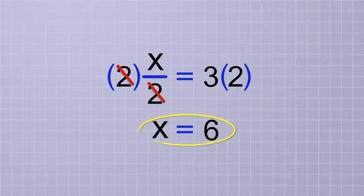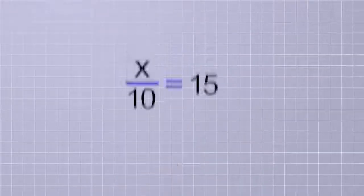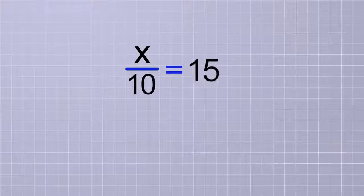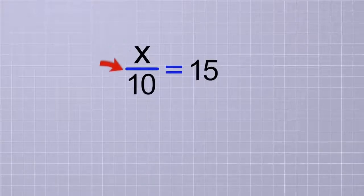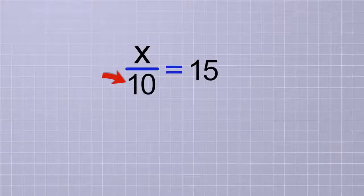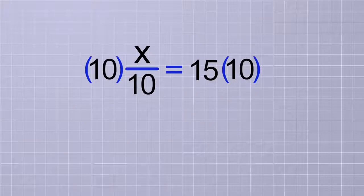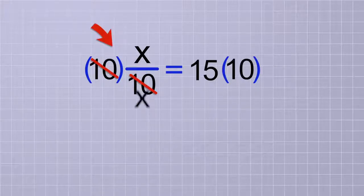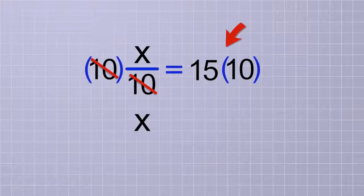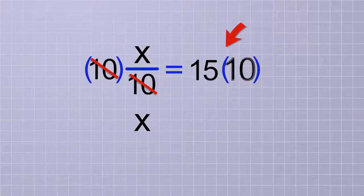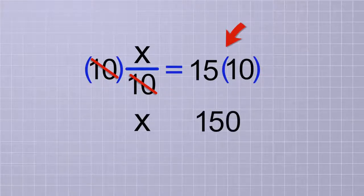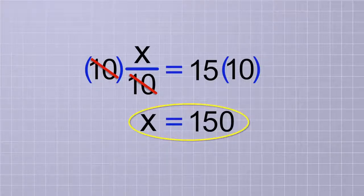So in this problem, x equals 6. That's not too hard either. Let's try another one: x over 10 equals 15. In this problem, since the x is being divided by 10, to get it by itself, we're going to need to multiply both sides of the equation by 10. On the first side, the 10's cancel, leaving x all by itself. And on the other side, we have 15 times 10, which is 150. So our answer is x equals 150.